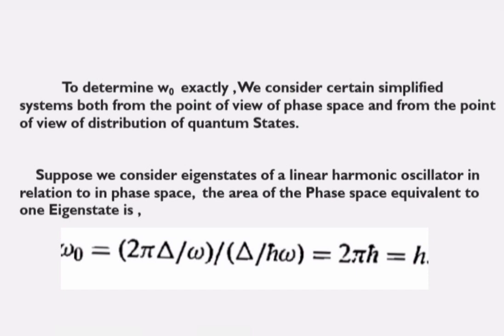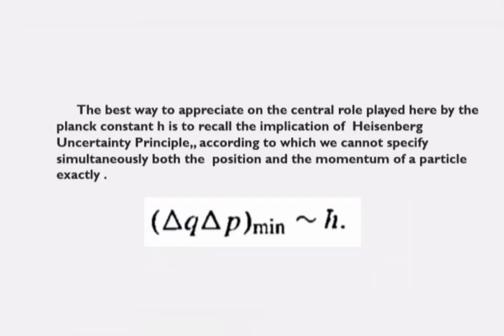Here, h is Planck's constant, which is equal to 6.63 × 10⁻³⁴ joule-seconds. In this equation, Planck's constant plays a central role, and to understand this we need to consider the Heisenberg Uncertainty Principle.